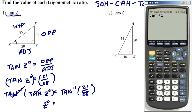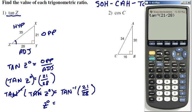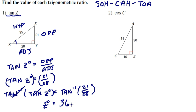of 21 over 28. Now make sure your calculator is in degree mode, which it is. Hit enter and we get angle Z is 36.8698. So let's go ahead and round that to 36.87 degrees.